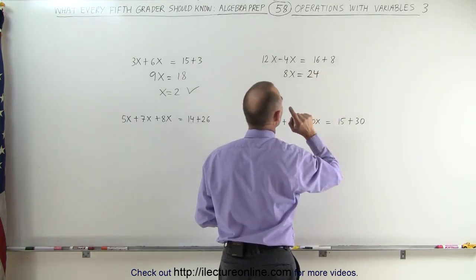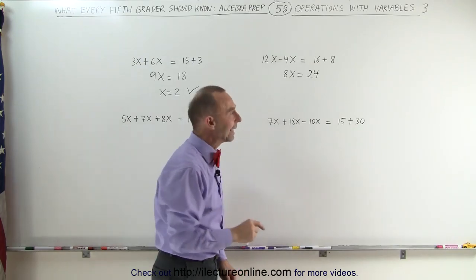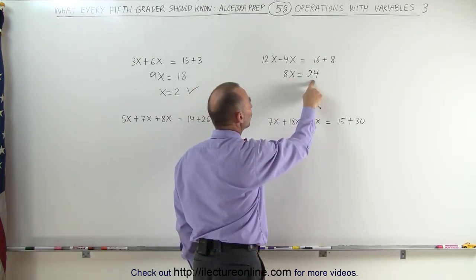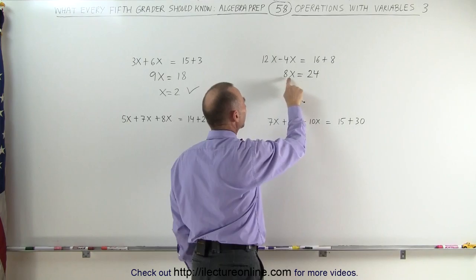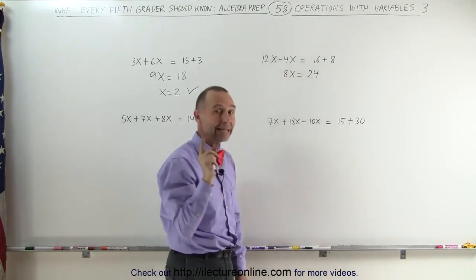Let's try the second equation and see what we get. 12x minus 4x, well, 12 minus 4 is equal to 8, so this gives me 8x. And on the right side, we get 16 plus 8, which is 24.